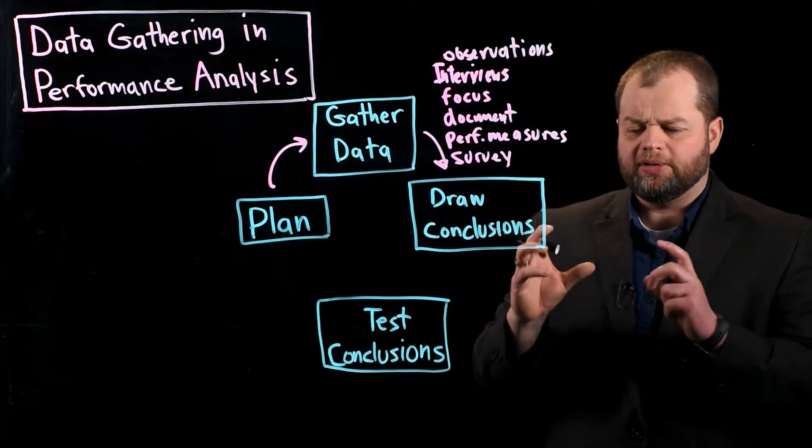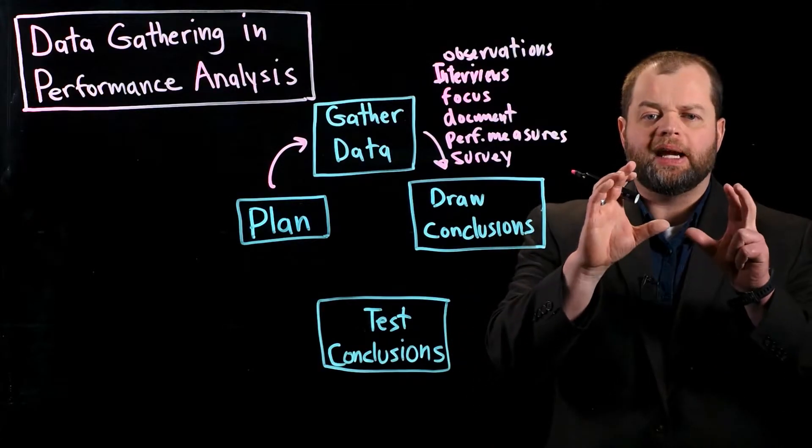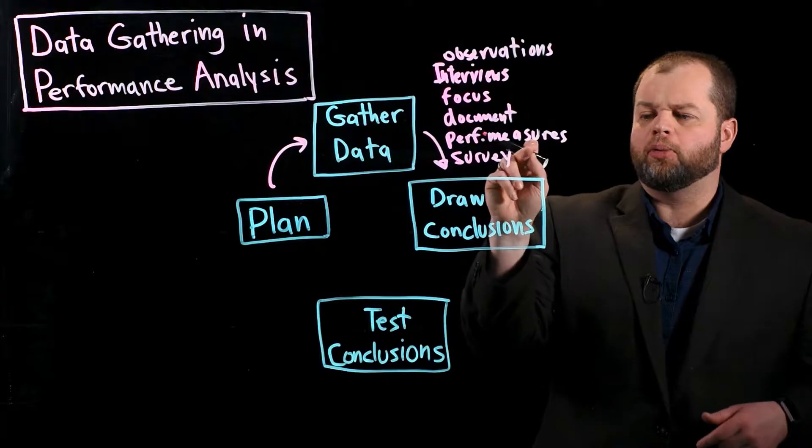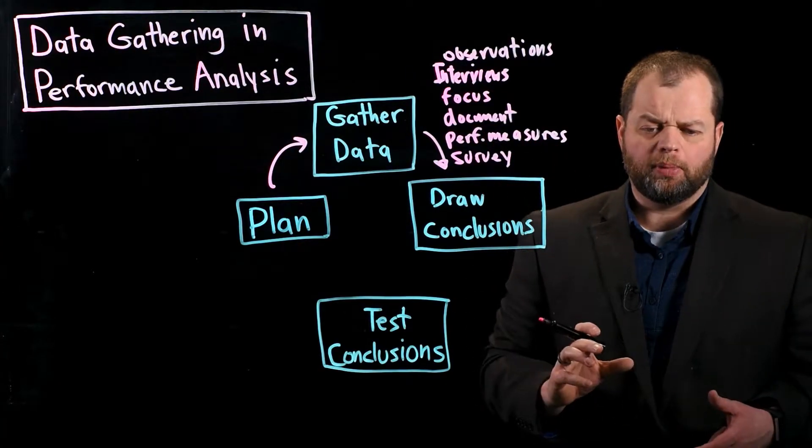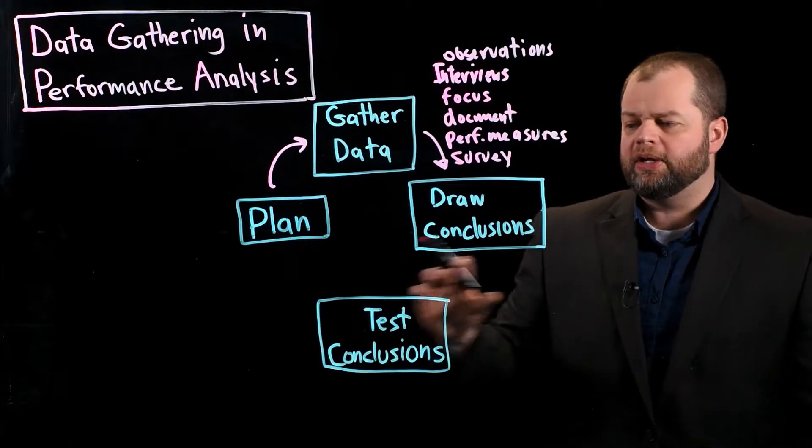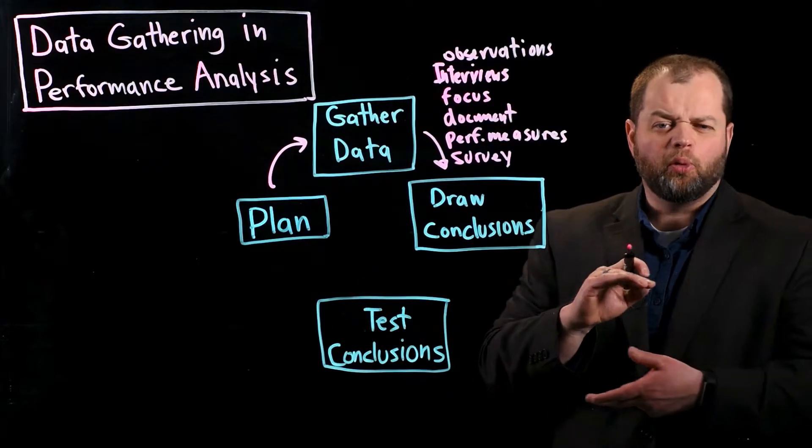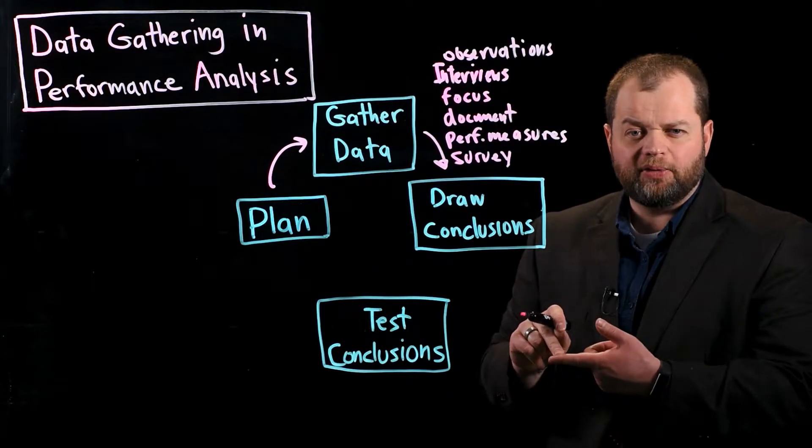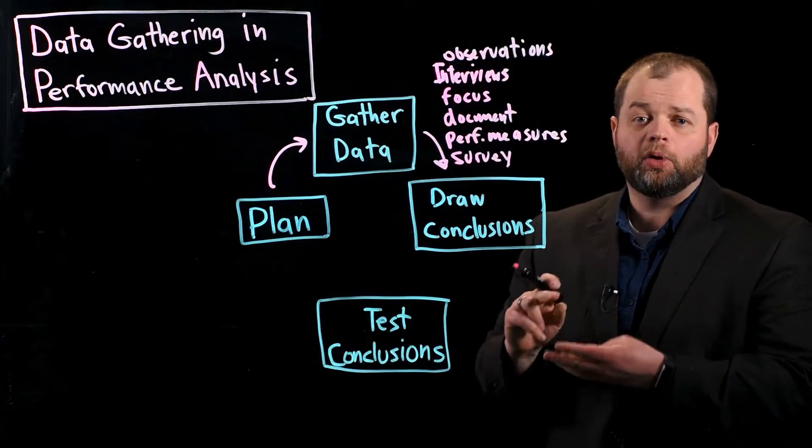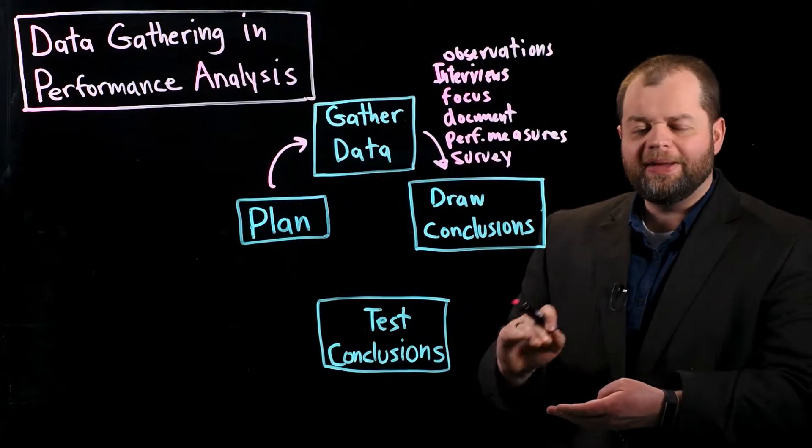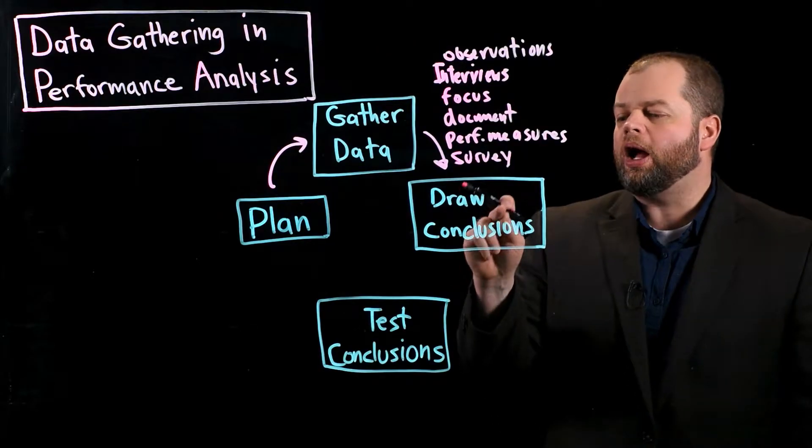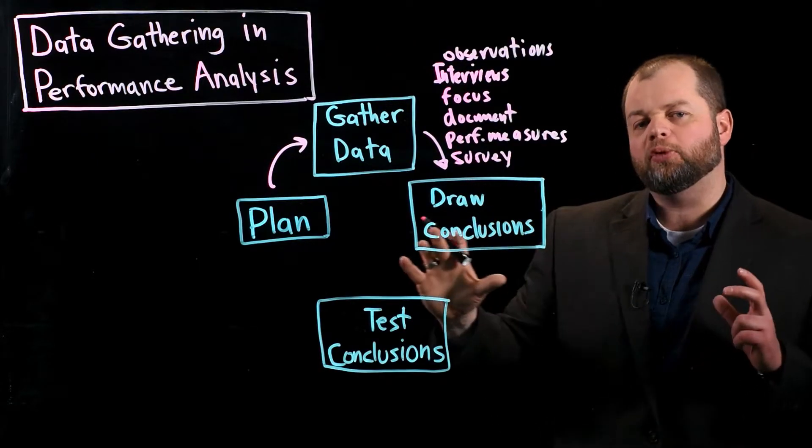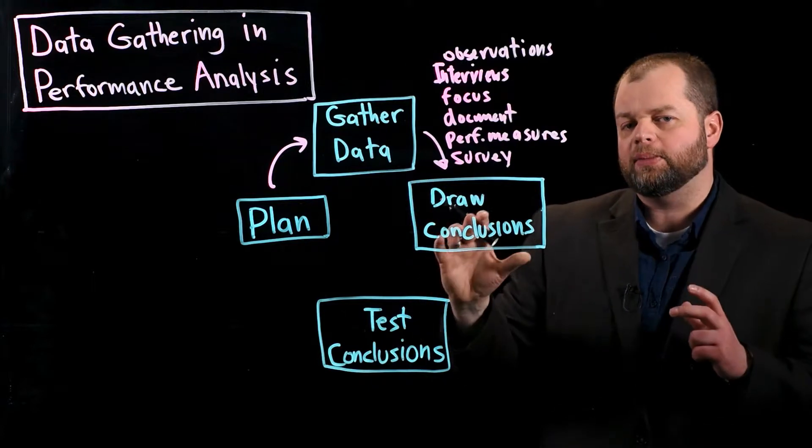So you might say, okay, here's this piece of data. This is telling me what the desired performance is. If it's the performance measures, the goals they have for the organization. Here's the actual performance. So I'm going to put this down here. Over here, you might have the four levels we talked about, the worker level, the work level, the workplace, and then also the world. There's these different levels of performance. So you need to start organizing them in that way. So draw your conclusions according to that performance analysis process that we talked about earlier.